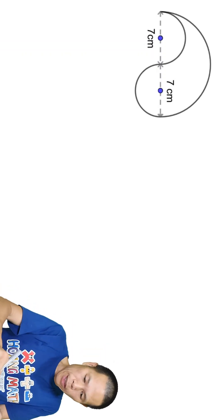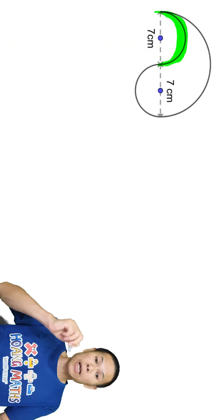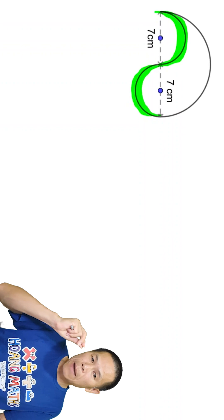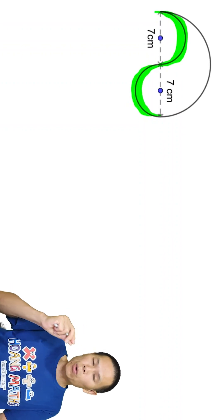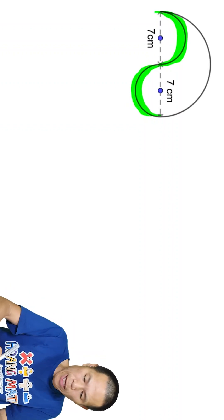So we know that this is half of a circle with a diameter of 7. And same as this, this is another half of a circle with a diameter of 7 as well. So these two half circles combined become a small circle, or a circle if you like.